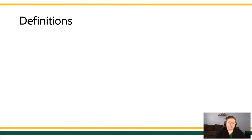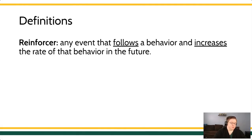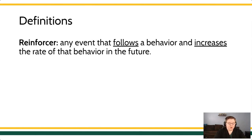When we're talking about reinforcement and punishment, a reinforcer is any event that follows behavior and changes the future rate of that behavior. Specifically, it increases the rate of behavior. The event we're talking about here is something that the environment — or something that the behavior produces in the environment — which then strengthens and drives that behavior again in the future.